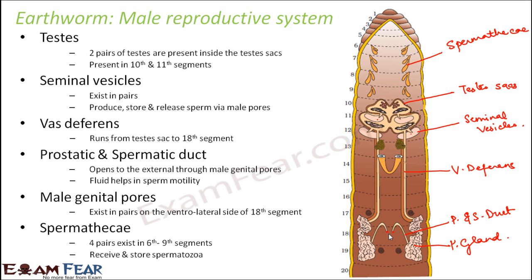Every earthworm has a male reproductive system, but for reproduction they exchange their sperms — fertilization does not happen with sperm and egg from the same earthworm. Earthworms exchange sperm: one earthworm releases sperms through the male genital pore, and the other earthworm receives those sperms through its spermathecae and stores them there. Once they exchange sperms, fertilization happens between the exchanged sperm and the female sex cell.